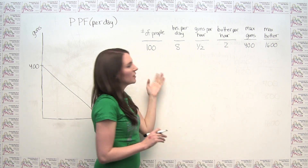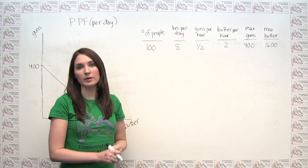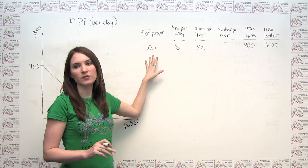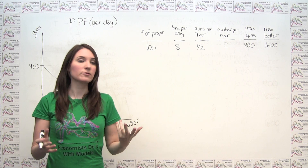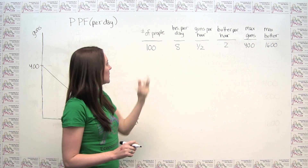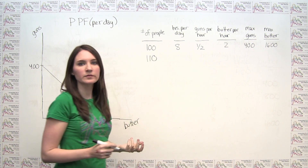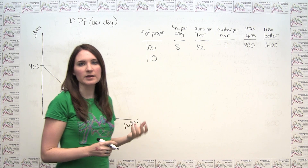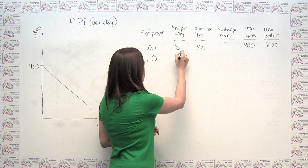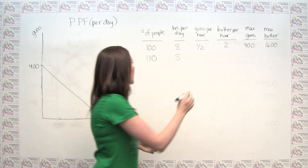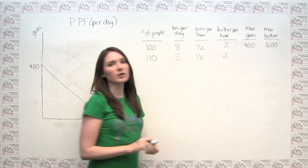So let's consider what happens if we just increase the number of factors of production available in this economy. In this case, the only factor of production that we've explicitly outlined is labor. So let's consider an increase in our labor force, and let's say that the number of people in our economy goes from 100 to 110. We don't want to change anything else — it's not like any of the individual people have gotten more productive. They're also not working more; they're still working eight hours a day, and they still face this trade-off between half of a gun per hour and two pounds of butter per hour.